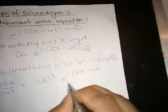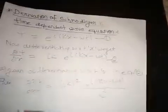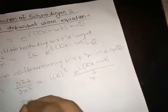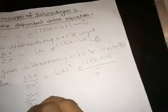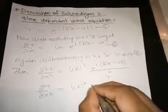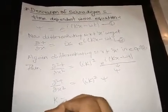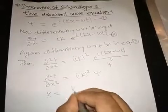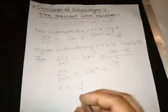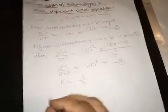Since this term is ψ, then ∂²ψ/∂x² equals (ik)². Since the propagation constant k equals p/ℏ, putting this value in equation number 3...